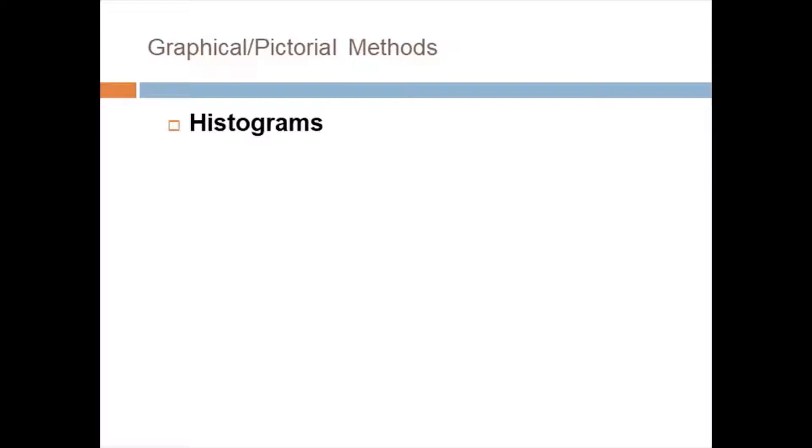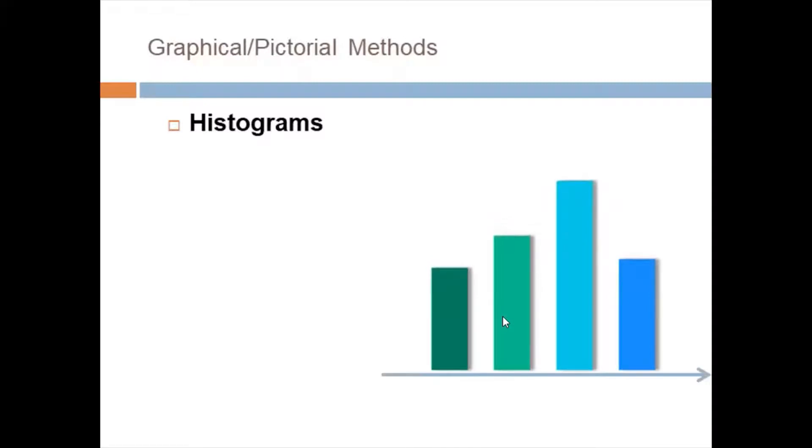First of all, we see histogram. Histogram is a chart which represents the visual values of variables, how they look like. It will look like it has few bars in it with different colors, meaning they are representing different values, different variables, which variable is on which extent.